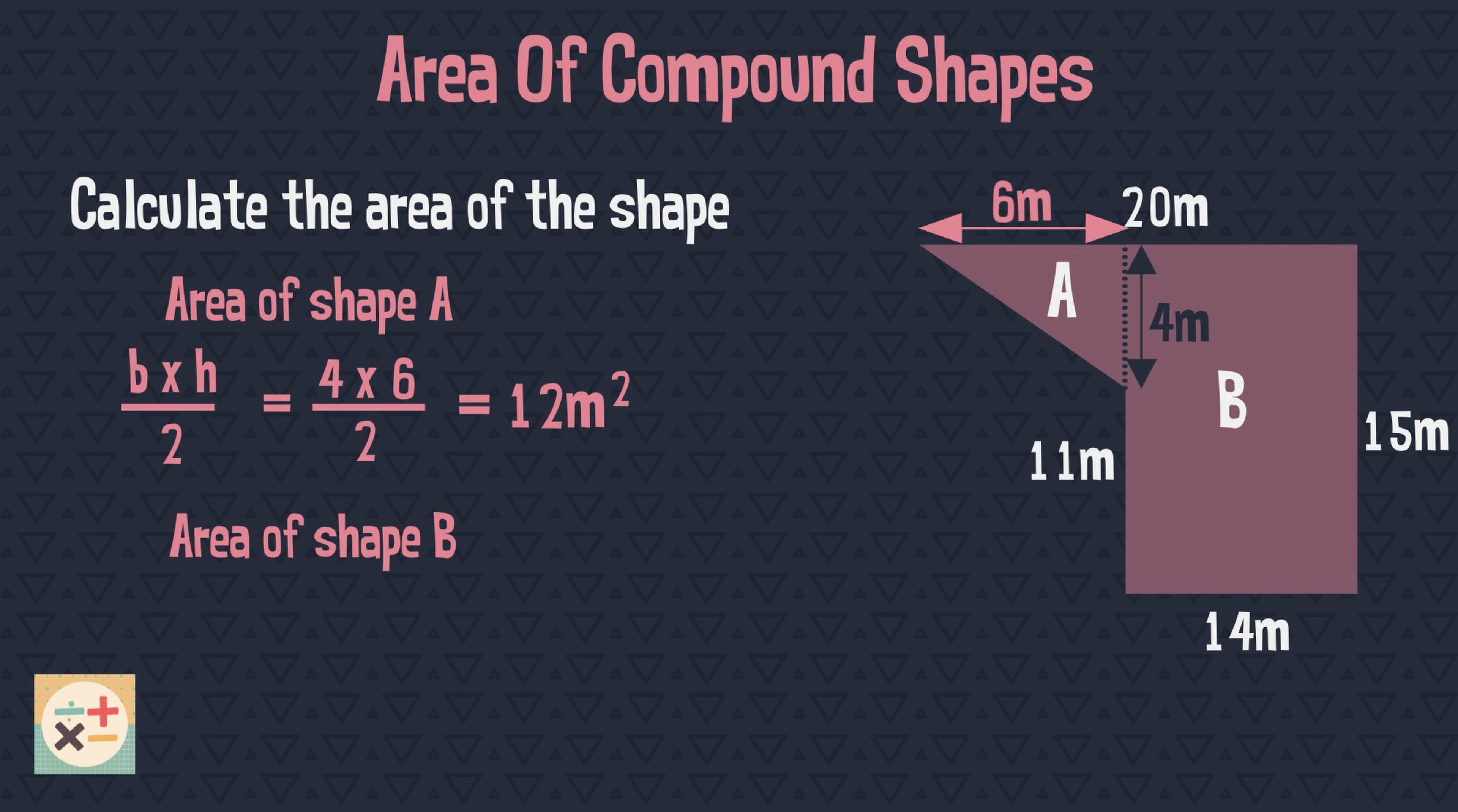To find the area of shape B, we simply multiply the length of the rectangle by the width. Now we can add these two areas together to find the total area of the compound shape.